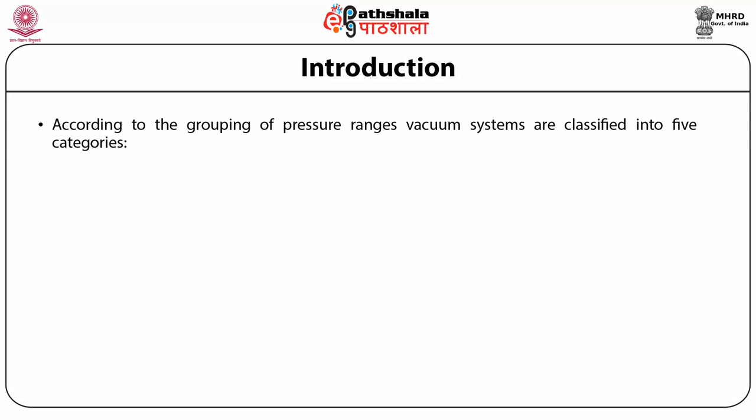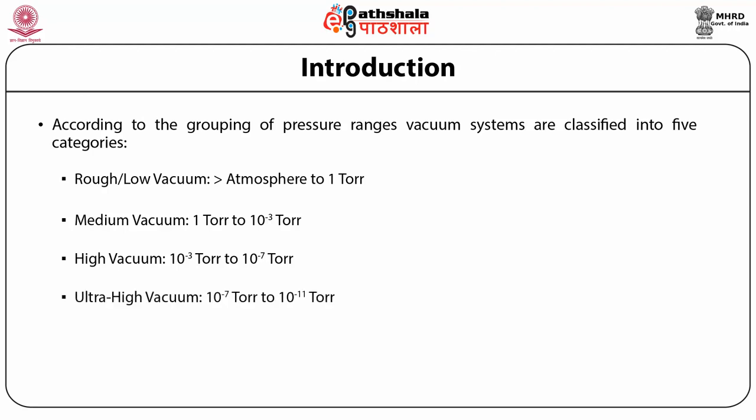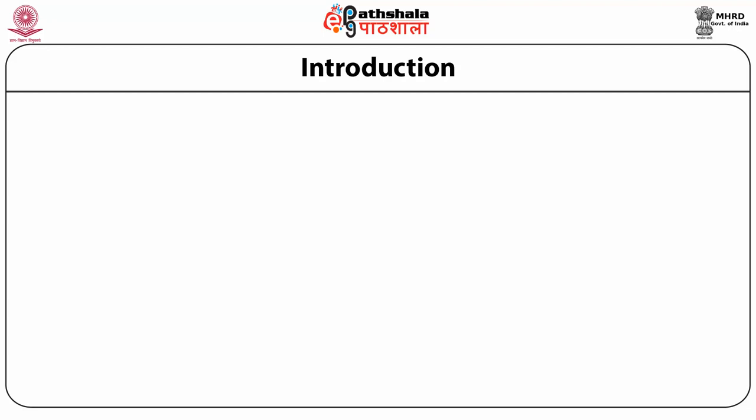According to the grouping of pressure ranges, vacuum systems are classified into five categories. The first category is the rough or low vacuum in which the pressure is from atmosphere to 1 Torr. The second range is medium vacuum in which the range is 1 Torr to 10⁻³ Torr. Third range is high vacuum in which the range is 10⁻³ Torr to 10⁻⁷ Torr. Next comes the ultra-high vacuum in which the range varies from 10⁻⁷ Torr to 10⁻¹¹ Torr, and finally there is extreme high vacuum in which the range is greater than 10⁻¹¹ Torr.